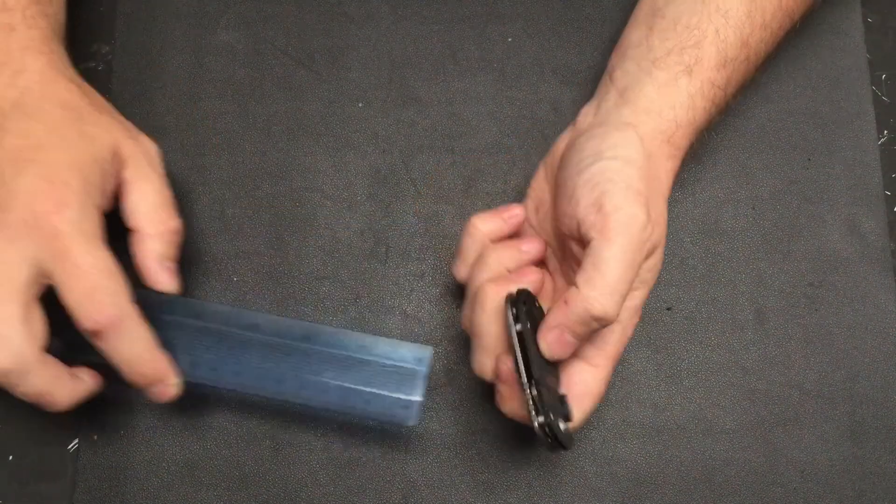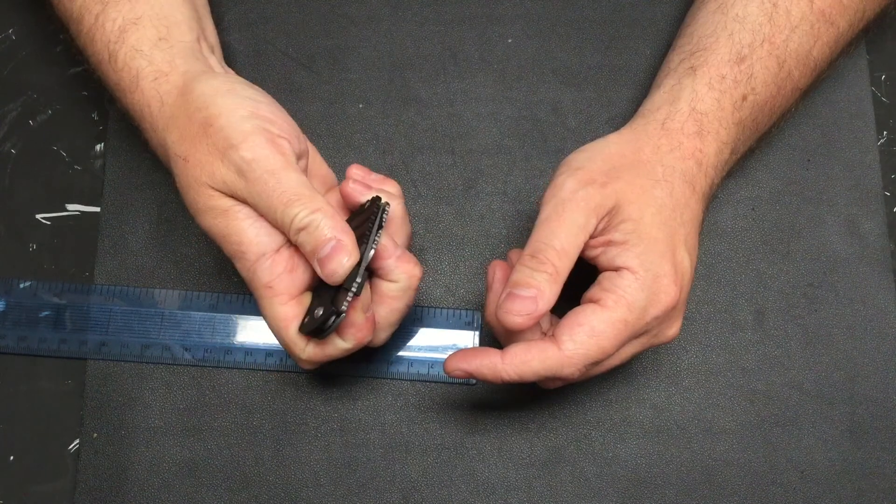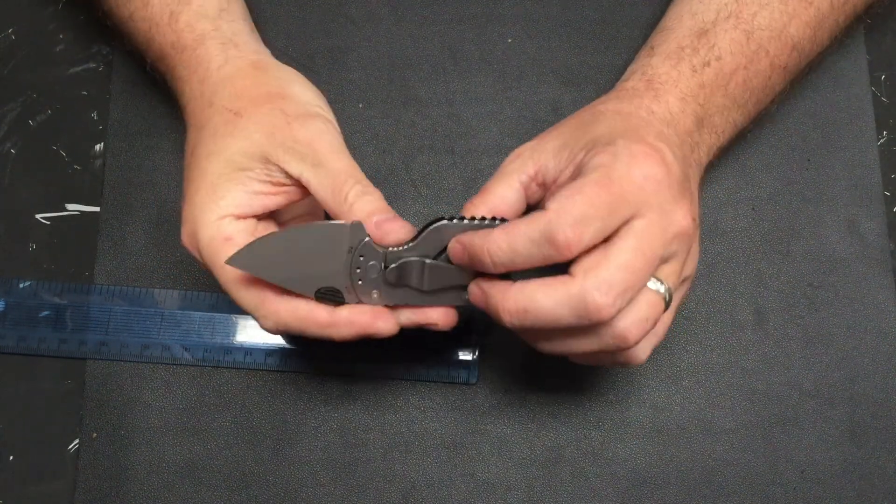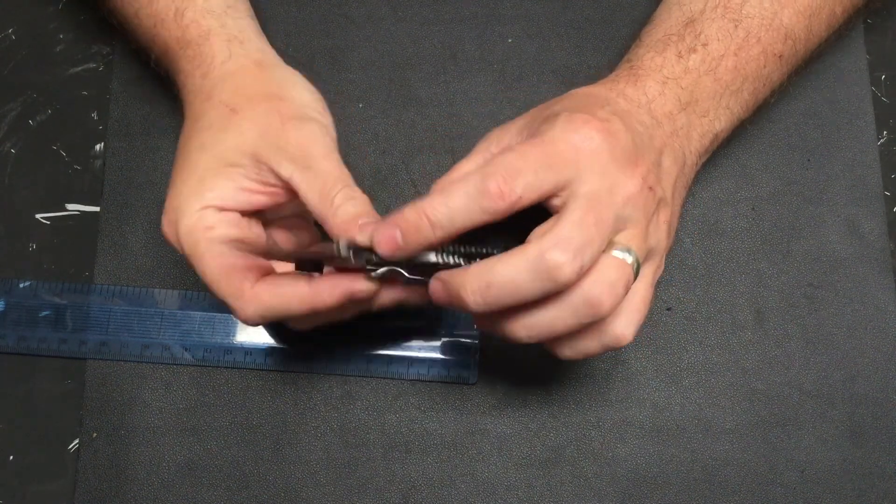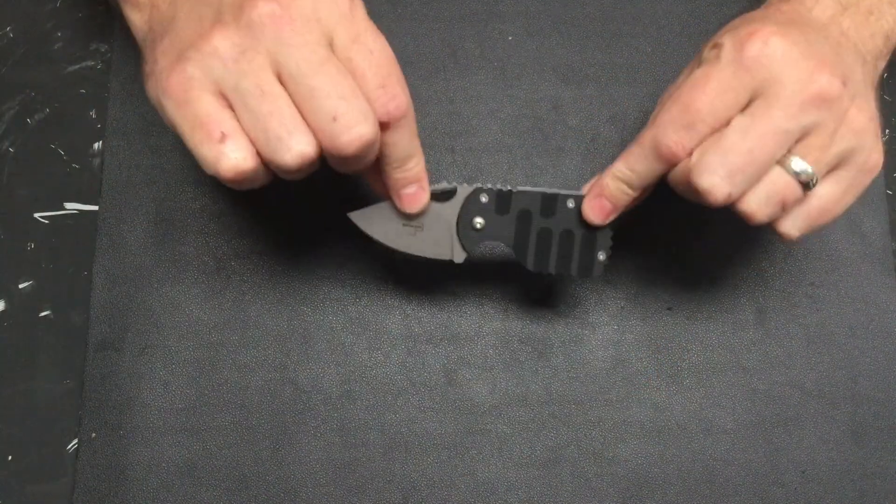we're looking at like six mil. So a very flat, slim-lined knife. It's been around a while, lots of different variants of it, but this is the frame lock version in D2. So from Boker Plus, that is the Subcom version 2.